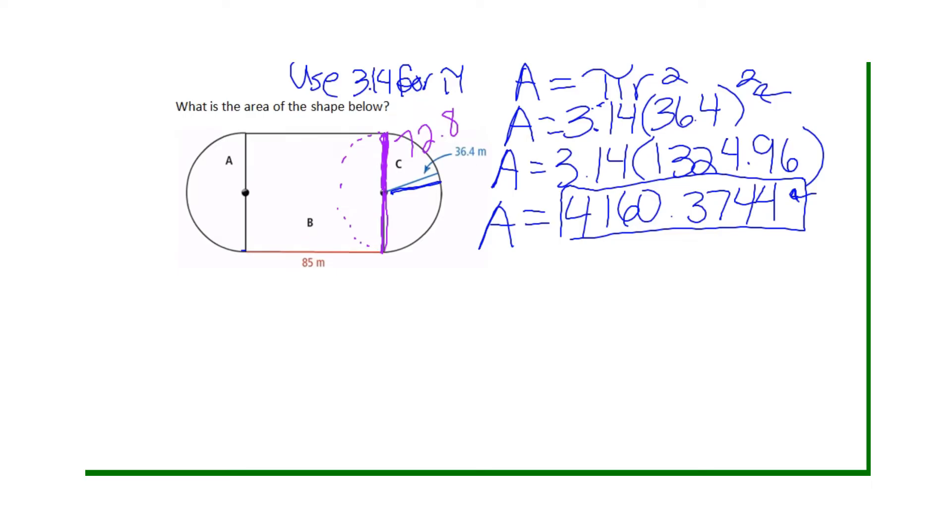So now we have to write our formula for area of a rectangle, which is area equals base times height. In this case, our base is 85 and our height is 72.8. So now to find the area, I just go ahead and simplify and multiply them together and I get 6,188.